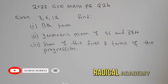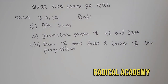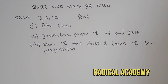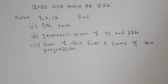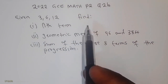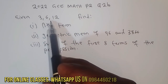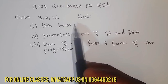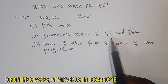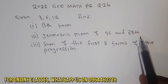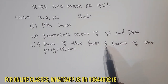Hello everyone, this is Word Academy. In this video I'm going to solve Mathematics 2022 GCE, specifically question 2b. This question is on sequences and series. The question gives us 3, 6, 12 and asks us to find: the nth term, the geometric mean of 96 and 384, and the sum of the first eight terms of the progression.